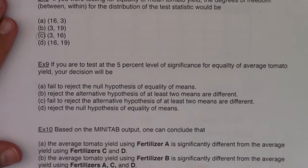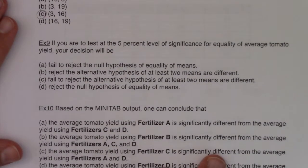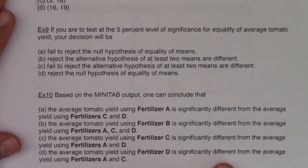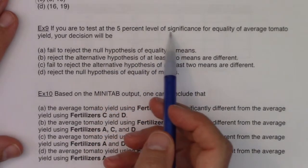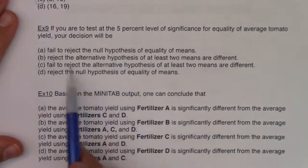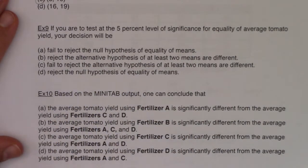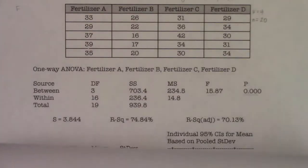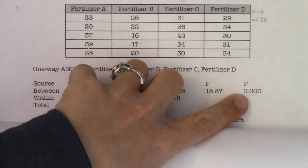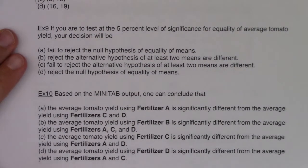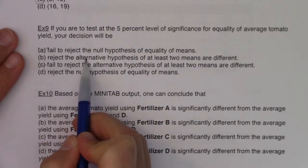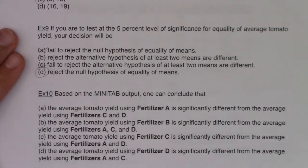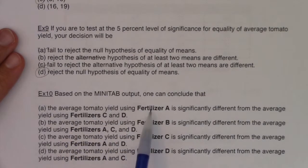Testing at the five percent level of significance for equality of average tomato yield, our decision would be: let's check the p-value. Looking at the Minitab output, the p-value is essentially zero. If the p-value is zero, I'm definitely going to reject the null. We never reject the alternate — we reject the null. So we reject the null hypothesis.